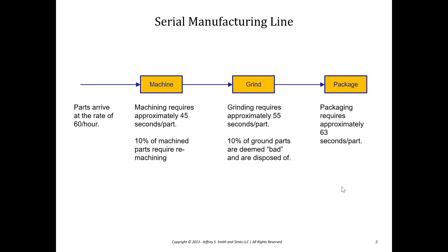The machining step requires approximately 45 seconds per part. The grinding step requires approximately 55 seconds per part. And the packaging requires approximately 63 seconds per part. Additional complexities include that 10% of the machined parts are going to need to be re-machined, and 10% of the ground parts are going to be deemed bad and we're going to have to dispose of those bad parts.